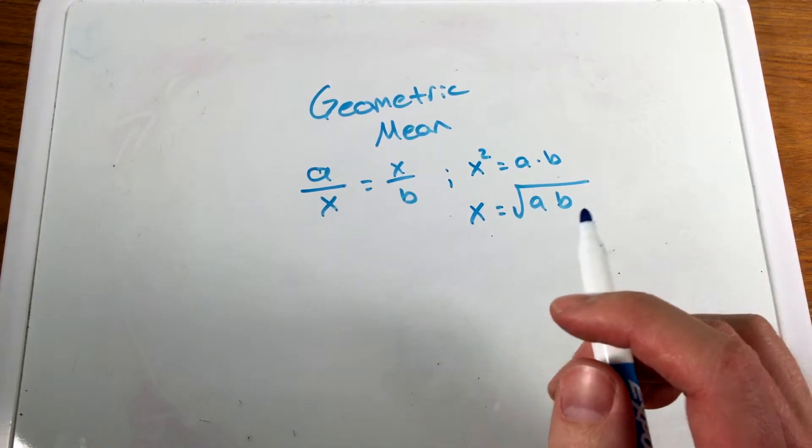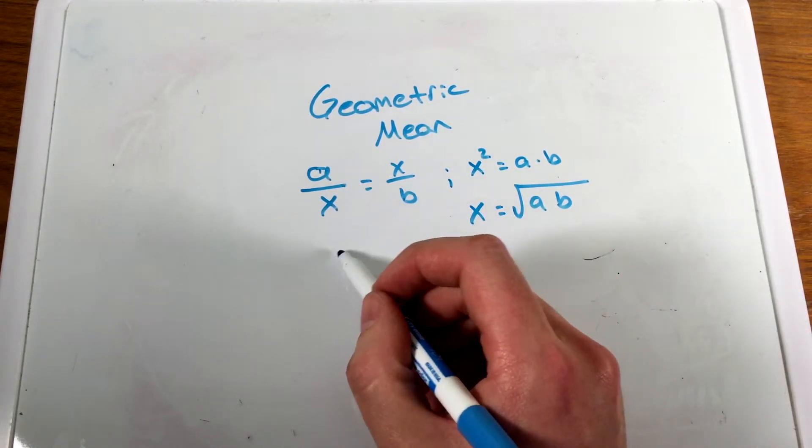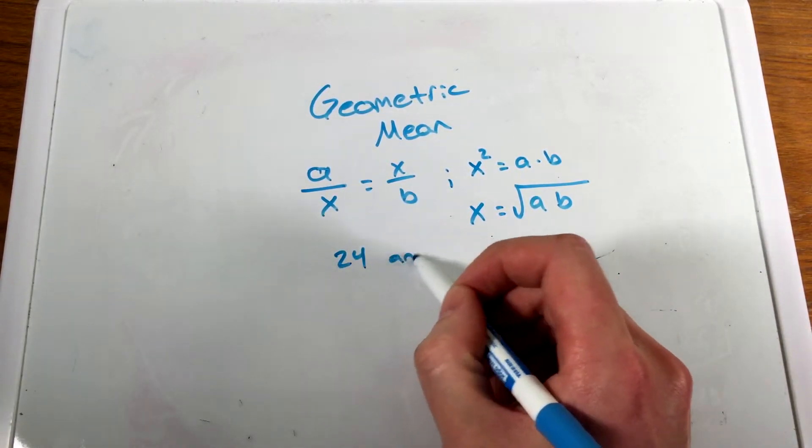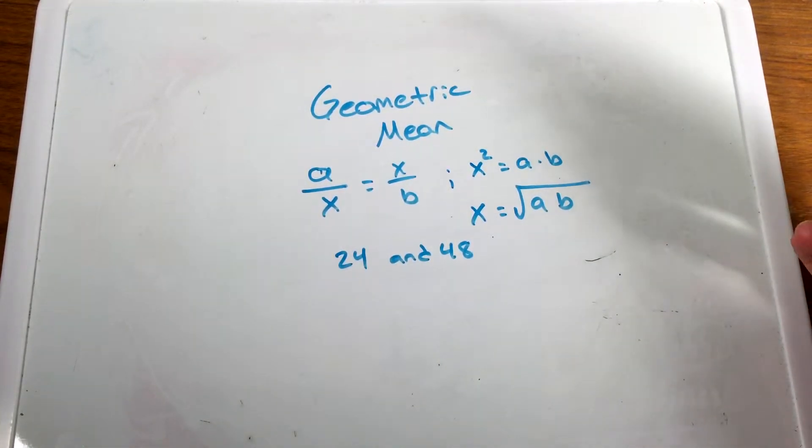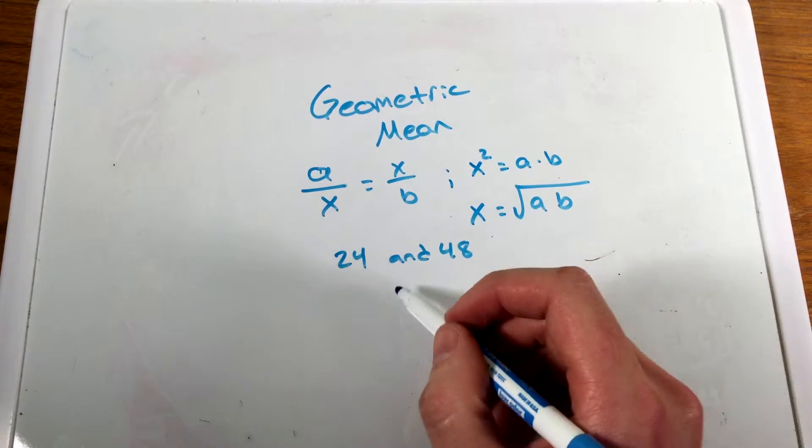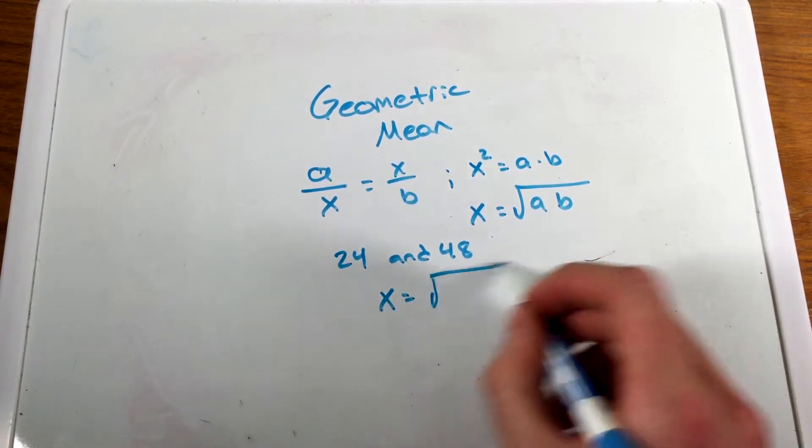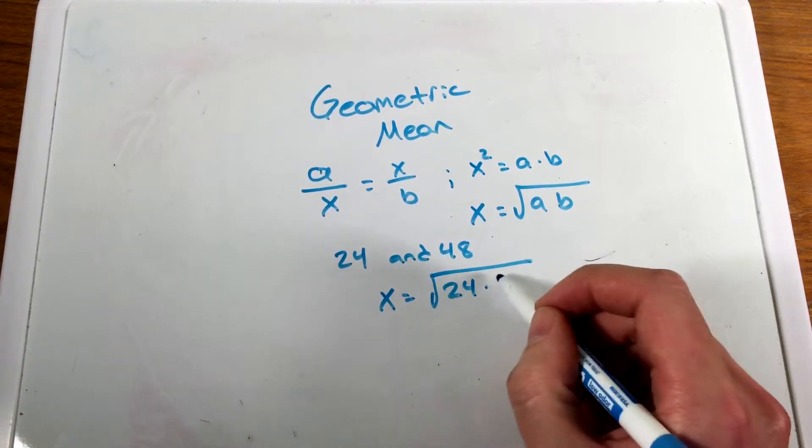If you want to find the geometric mean between two numbers like 24 and 48, all we say is x equals the square root of 24 times 48.